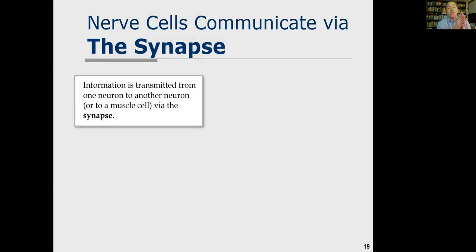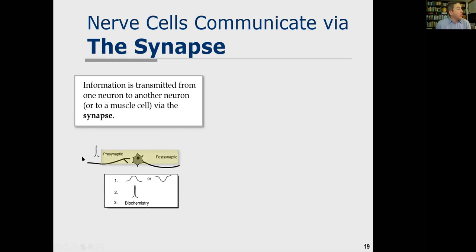Nerve cells, which produce action potentials resulting from shifts in sodium and potassium ion conductance, communicate via what's called a synapse. Electrical activity from one cell is transmitted to another neuron or a muscle cell via the synapse. There is a presynaptic neuron and a postsynaptic neuron, and information — those action potentials — is transferred from the presynaptic to the postsynaptic neuron.